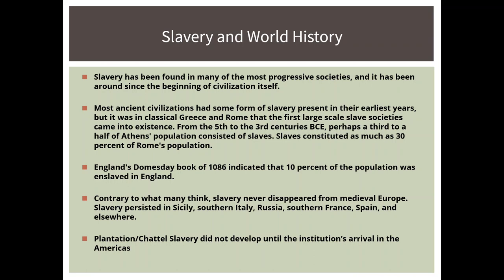Slavery has been around pretty much as long as human civilization has. Most ancient civilizations have some form of slavery — there is slavery in ancient Greece, ancient Rome, Egypt, you name it. Estimates are that somewhere around 30% of both the population of Athens and Rome were slaves. The Domesday Book of 1086, written in England, says about 10% of the English population was enslaved. So slavery has been around for a long, long time. That's really important to know.